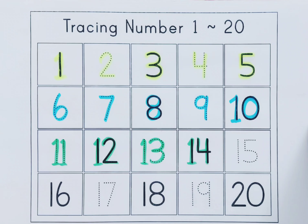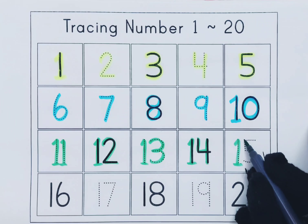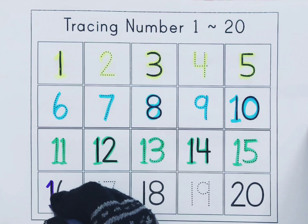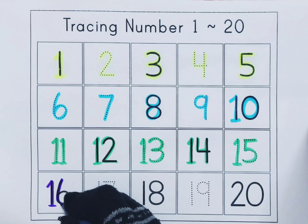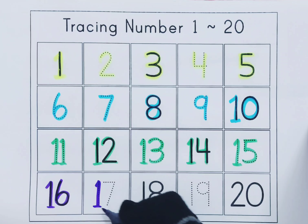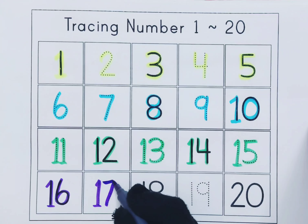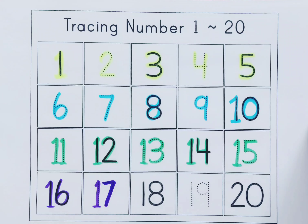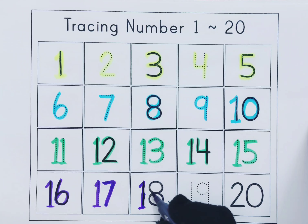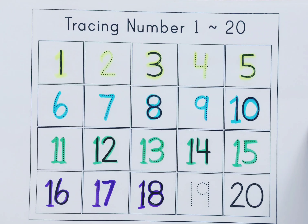This is 15 - F-I-F-T-E-E-N - 15. This is 16 - S-I-X-T-E-E-N - 16. This is 17 - S-E-V-E-N-T-E-E-N - 17. This is 18 - E-I-G-H-T-E-E-N - 18. This is 19 - N-I-N-E-T-E-E-N - 19.